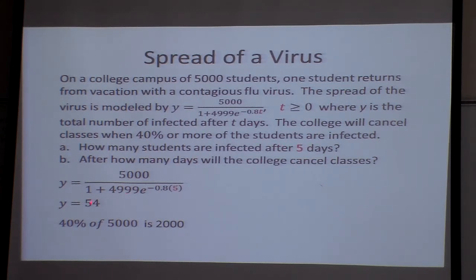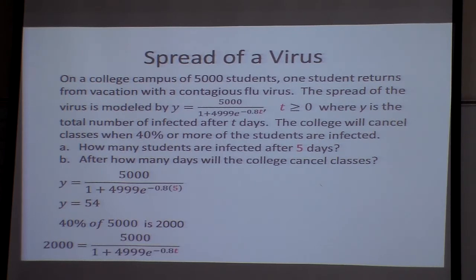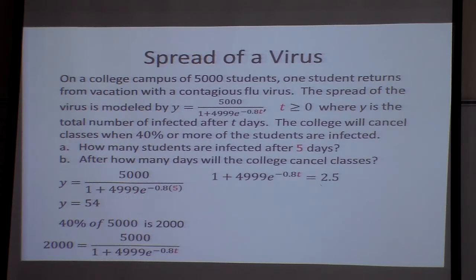Now I need to find when they'll cancel classes. That happens at 40% of 5,000, which is at 2,000 — or 0.40 times 5,000. I'm going to plug this 2,000 into the equation to solve it. The first thing I want to do is multiply one side by that and divide by 2,000. Basically I switch sides: that moves to the numerator, this one to the denominator, and 5,000 divided by 2,000 is 2.5.